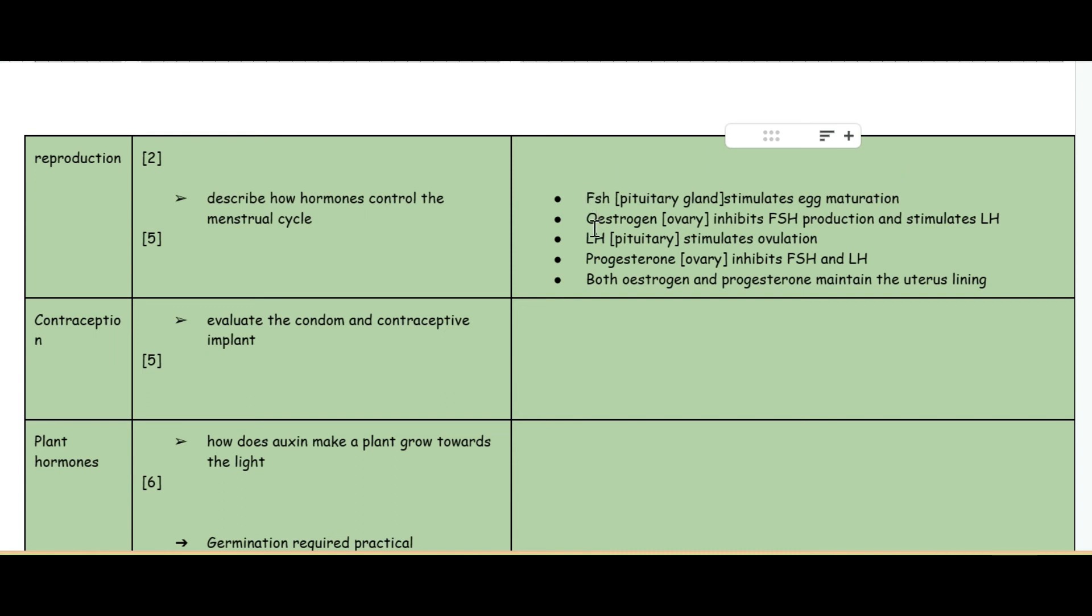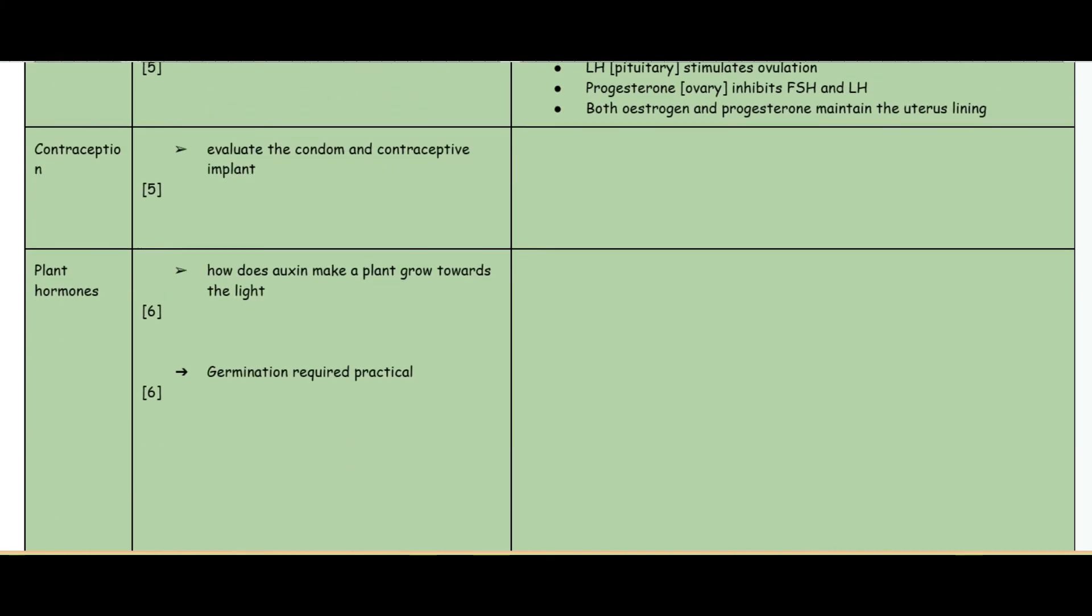Then you have estrogen produced by the ovary which inhibits FSH production and stimulates luteinizing hormone LH. The LH is released from the pituitary gland and stimulates ovulation. Then progesterone is released from the ovary which stops, inhibits FSH and LH. Both estrogen and progesterone maintain the uterus lining. Those are the key things that you need to mention in your answer.